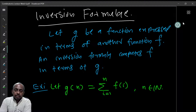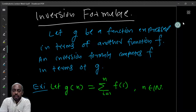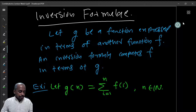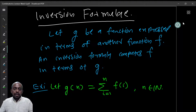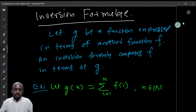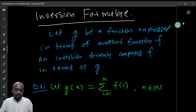Before going further, let us look at what is called an inversion formula. Suppose you are given a function g that is expressed in terms of some other function f. An inversion formula is a formula that computes the function f in terms of g. So you are given g in terms of f, and you want to find out what is f in terms of g.